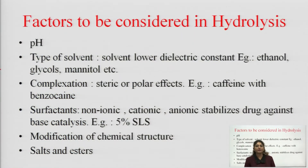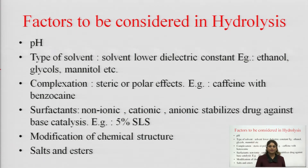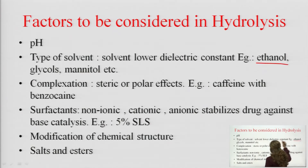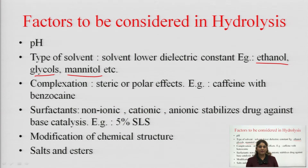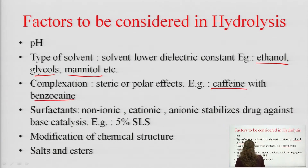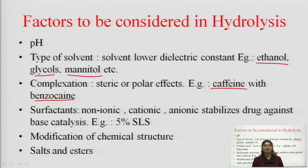First is pH: you can change the pH of the drug's surroundings so it does not undergo hydrolysis when coming in contact with water. Water is neutral in nature, so by making the environment acidic or basic, the drug's hydrolysis can be prevented. Next is type of solvent: you can change the solvent — for example, ethanol, glycerol, or mannitol — to prevent hydrolysis. Next is complexation: you can form a complex of your drug. For example, caffeine and benzocaine form a complex which prevents the hydrolysis of benzocaine.